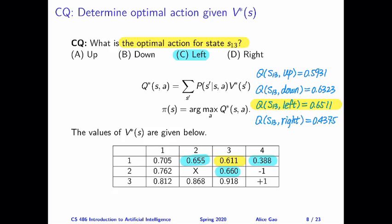And we're asked to determine the optimal action for state s3. In order to do this, all we need to do is calculate the Q values for each of the four possible actions. Let's take a look at the calculation process.